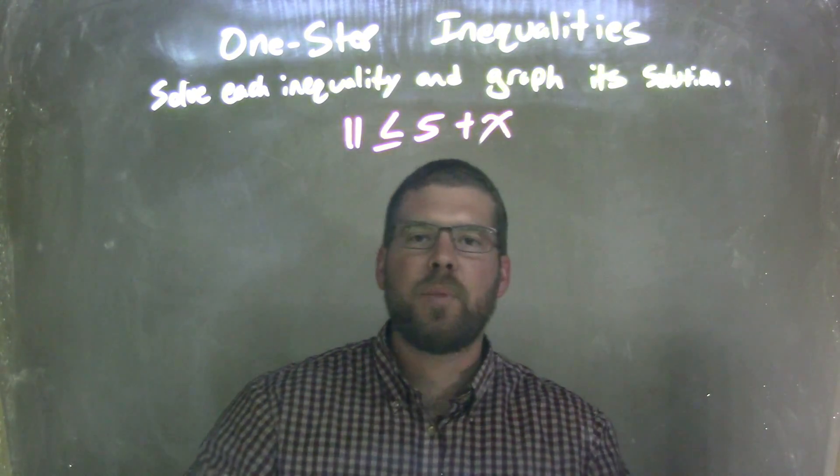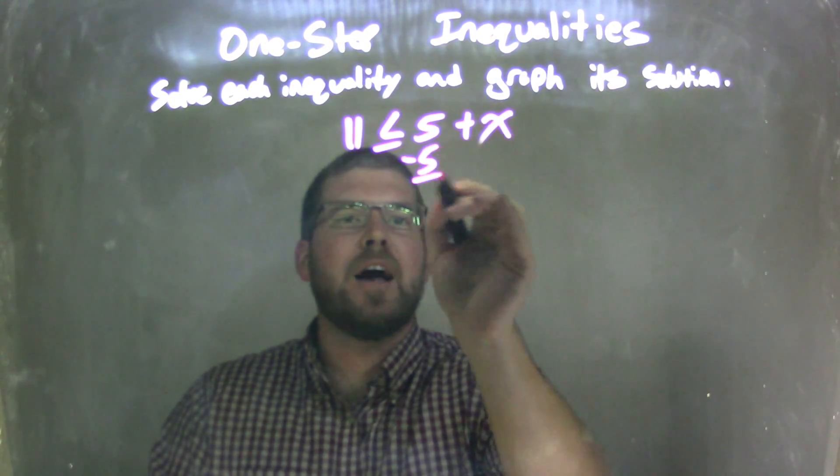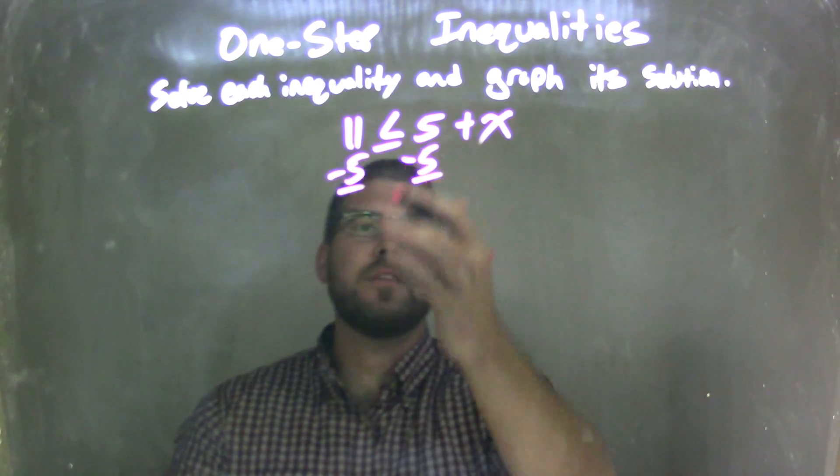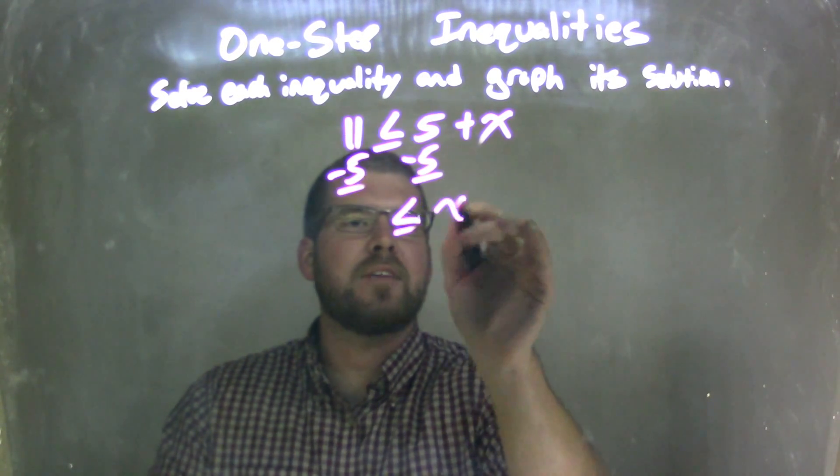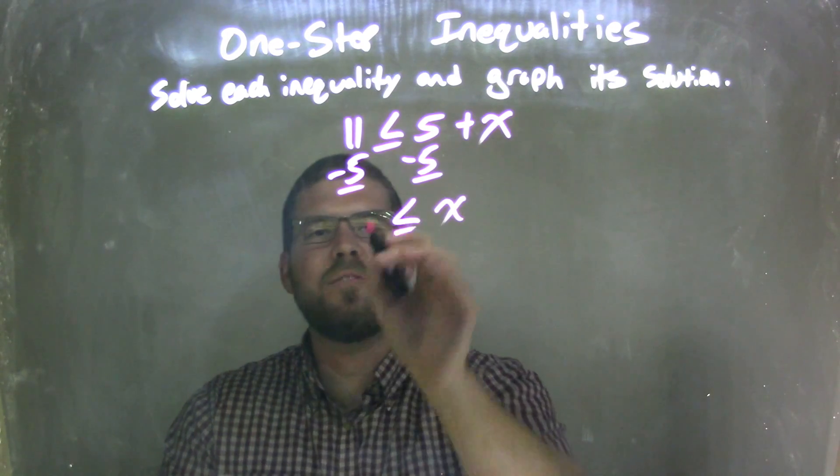I need to get x by itself, so I'm going to subtract 5 from both sides. By subtracting 5 from both sides, I'm left with x on the right and 11 minus 5 on the left, which is 6.